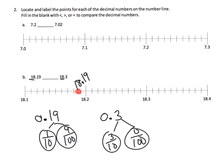Now where does 18.3 go? We can see it right here. Since 18.3 is to the right compared to 18.19, that tells you that 18.3 is larger than 18.19. So our symbol in this case would be the less than symbol.